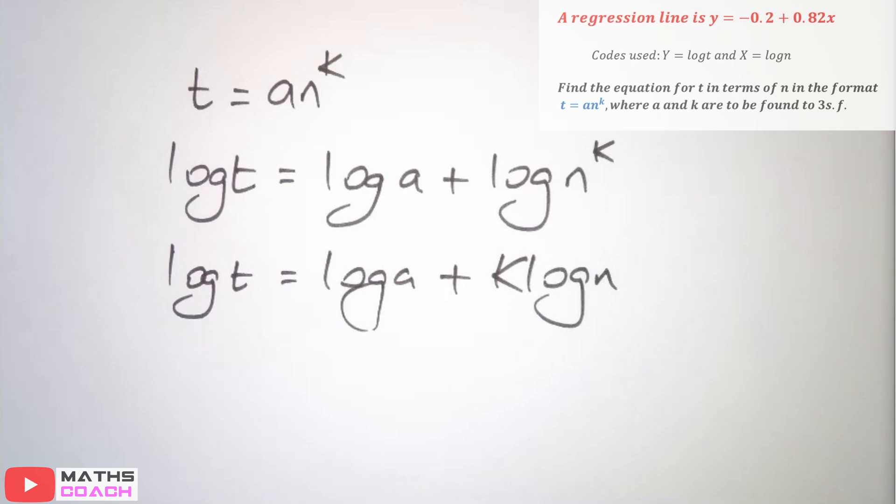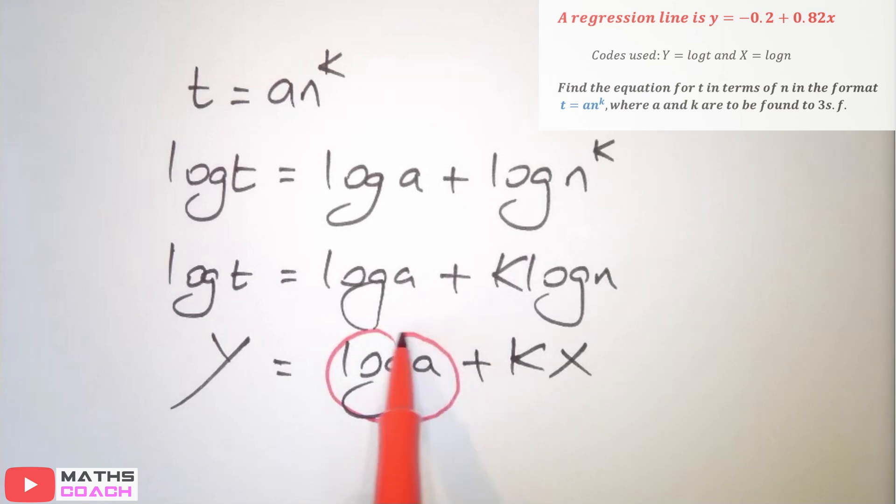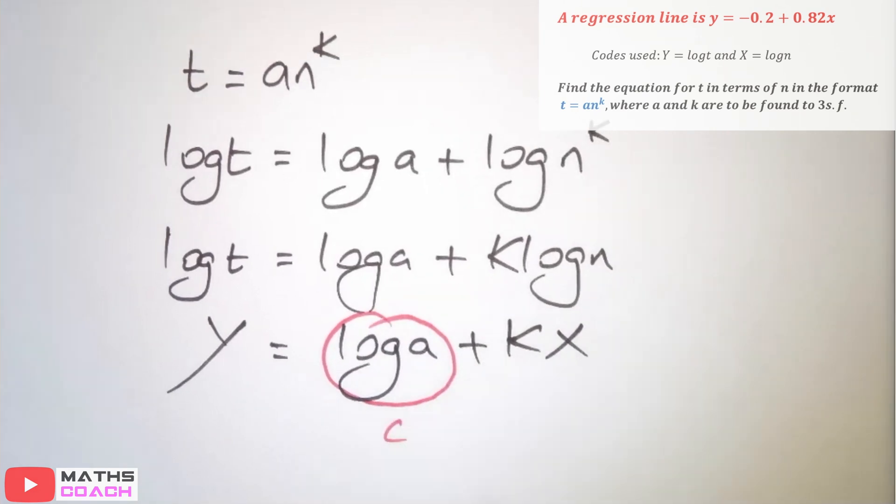Now it's really important that we compare that with our codes. We have log t, but we know log t for my code is y, equals log a, which we don't know, so that would be left as log a, add, and log n happens to be x, so we have k x. If we compare that to mx plus c, this must be our c, and here this k must be our m.